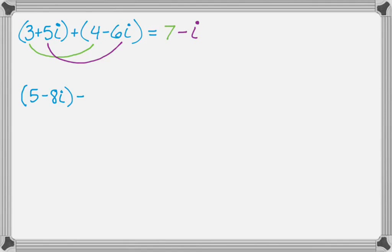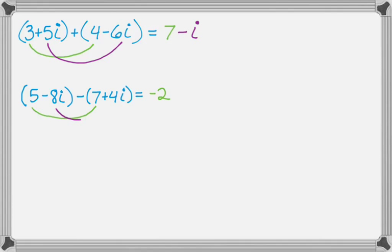Now let's say we have the problem 5 minus 8i minus the quantity 7 plus 4i. Using parentheses is important here because you have to remember to distribute that negative sign. So 5 minus 7 gives negative 2 — that's real minus real. Then negative 8i minus 4i gives negative 12i.